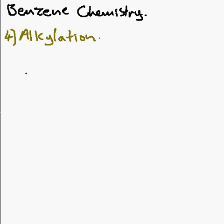So now we're going to have a look at alkylation. What we need to remember is that an alkyl group is like some sort of carbon chain, but we're going to simplify this for this reaction — it could be any sort of thing, as long as it's got a carbon in it. And it's going to be positively charged so that it interacts with the delocalized ring of benzene.